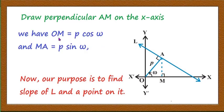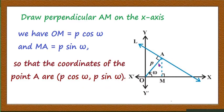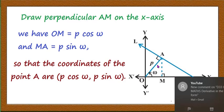Draw AM perpendicular to the x-axis from point A. From triangle OMA, cos omega = OM/OA, so OM = p cos omega. Also, sin omega = AM/OA, so MA = p sin omega. Using this, the coordinate of A is (p cos omega, p sin omega), and we have found a point on the line.